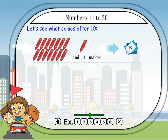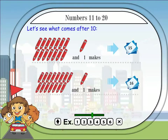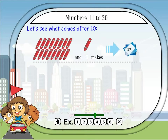Thirteen and one makes fourteen. Fourteen and one makes fifteen. Fifteen and one makes sixteen.